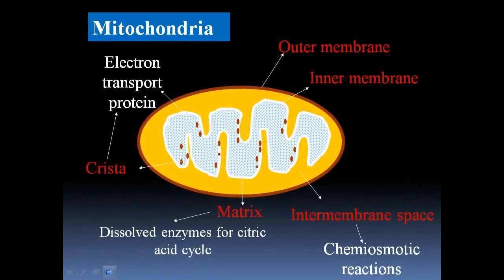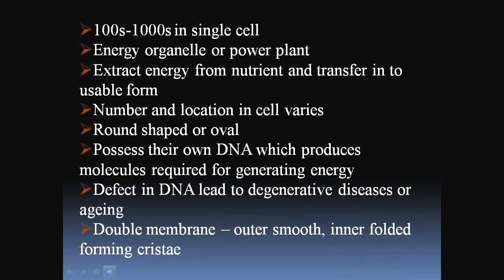Mitochondria have different parts: outer membrane, inner membrane, inter-membrane space, matrix, and cristae. The number may vary from 100 to 1000 in a single cell. They are the energy organelles or power plant of our body, extracting energy from nutrients and transferring it into a usable form. They are round or oval in shape. They possess their own DNA which produces molecules required for generating enzymes; defective DNA leads to degenerative diseases or aging. The outer membrane is smooth while the inner membrane is foldable to form cristae.